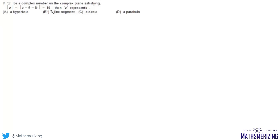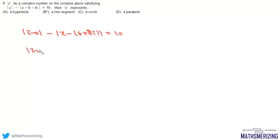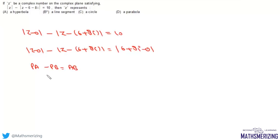Next question: if z satisfies |z - 0| - |z - (6 + 8i)| = 10, what does z represent? We can rewrite this as |z - 0| - |z - (6 + 8i)| = |6 + 8i - 0|, since |6 + 8i| = 10. So PA - PB = AB. When PA - PB equals AB, point P lies on the ray extending beyond B to the right of B. The option closest to this is a line, but technically it is not a full line segment — it is a ray.